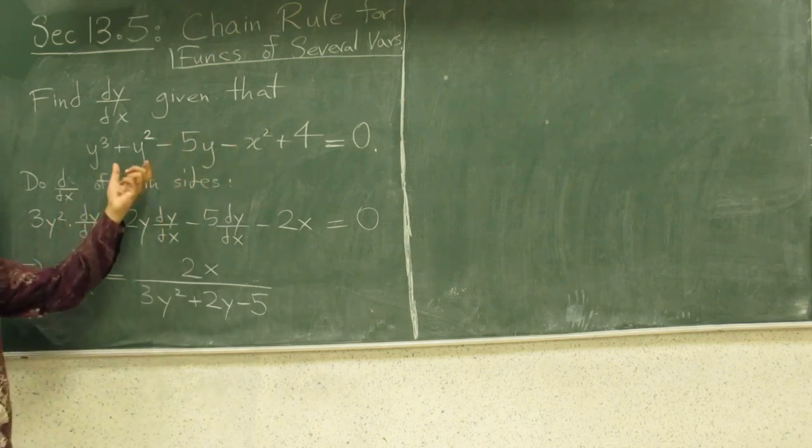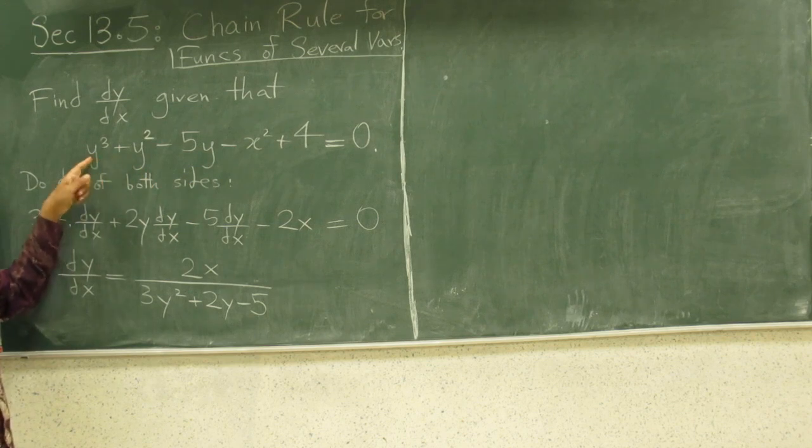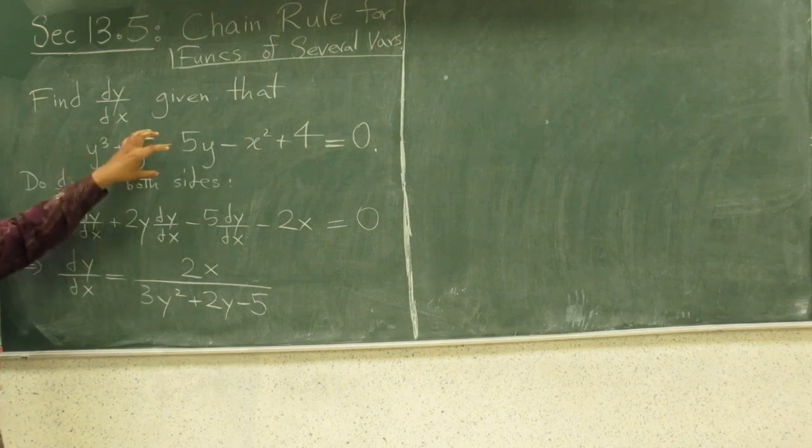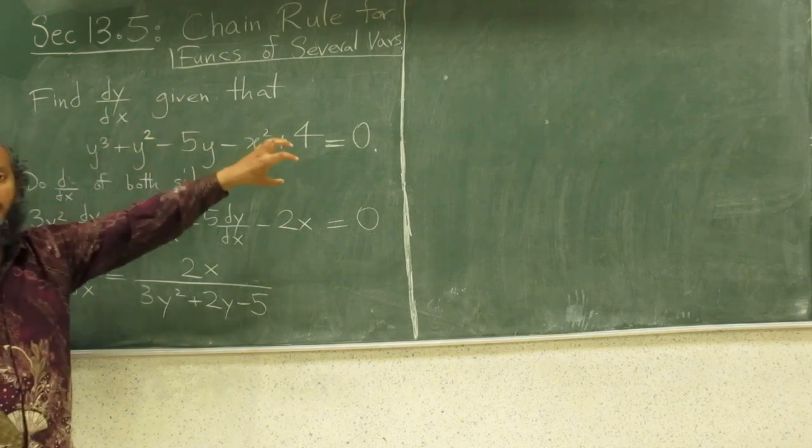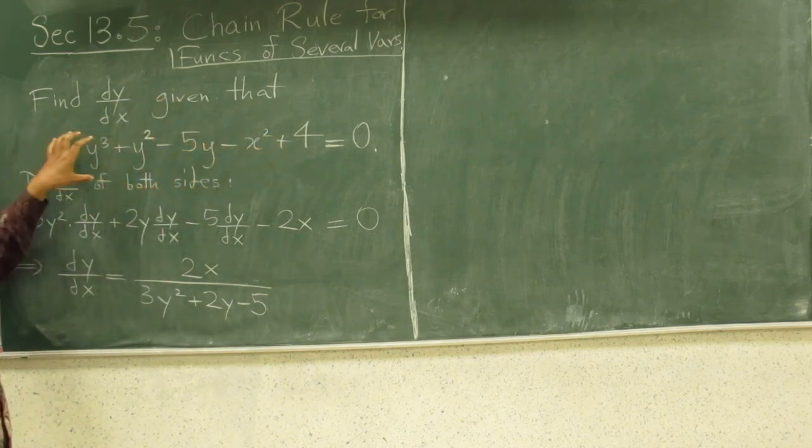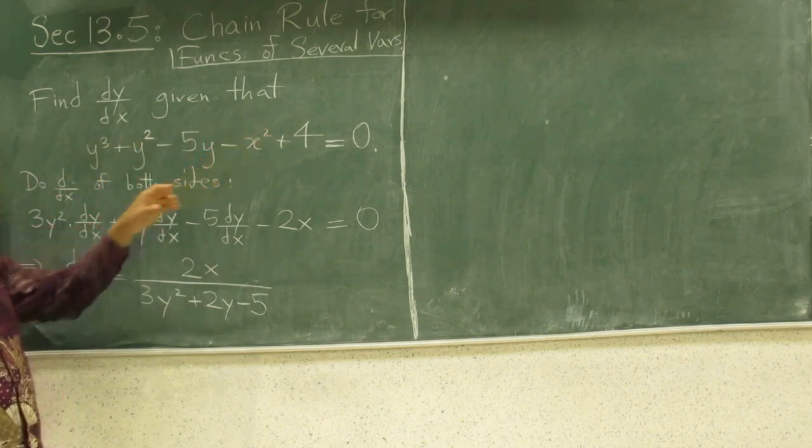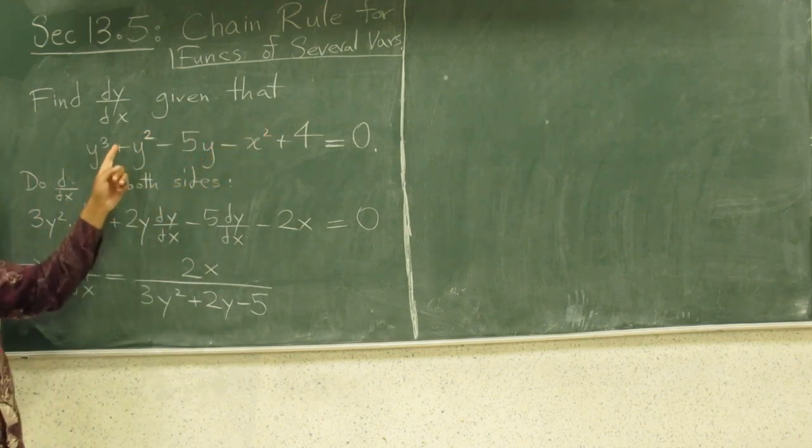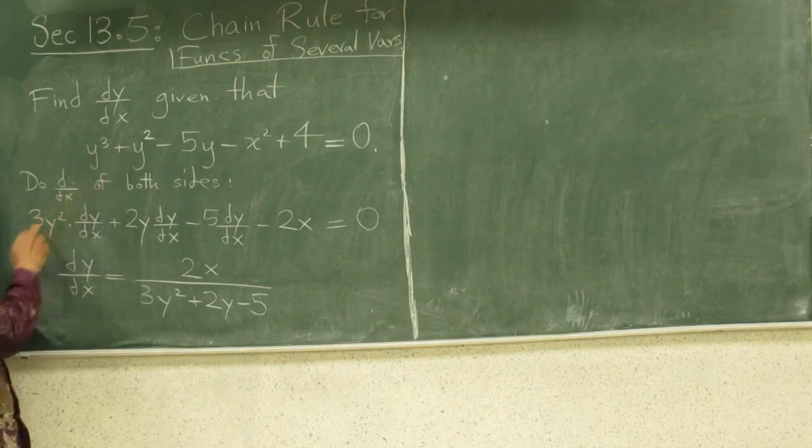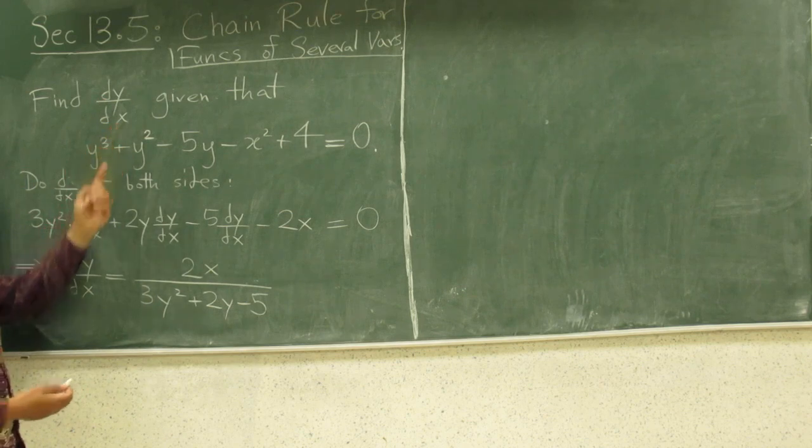So, as you learned in calc 1, you don't need to actually do a lot of Herculean algebra to extract y out of this and express it as a function of x. You can just go ahead and differentiate implicitly, do derivative with respect to x of both sides. Derivative of y would be 3y squared, but keep in mind y is a function of x. We want to treat it as a function of x.